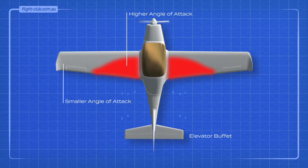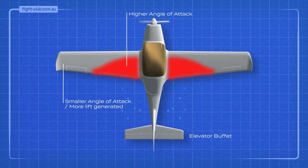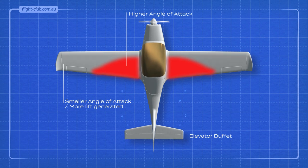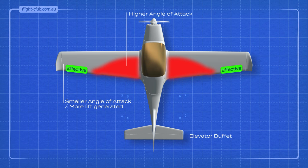Stalling at the wing root means that more lift is generated at the outer sections of the wing. This makes the aeroplane more stable in the event of an uneven loss of lift. Stalling at the wing root also means that the ailerons near the wing tips are more effective.